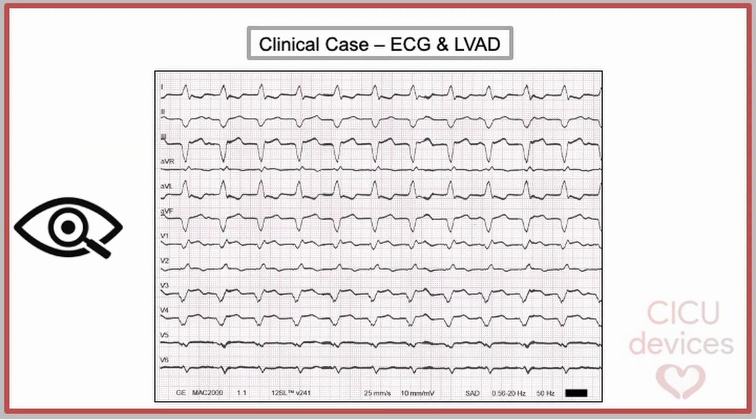If we carefully read the recording, we can detect certain data that may guide us toward identifying the type of LVAD. First, we confirm that it is an ECG recorded at 25 mm per second, with an amplitude of 10 mm per millivolt, a high pass filter of 0.56 Hz, and a low pass filter of 20 Hz.